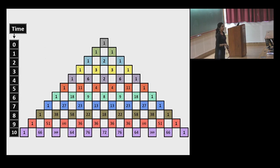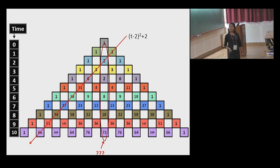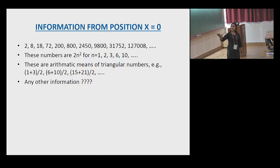If I write the same with numbers again, without that 2 to the power t division, what I can observe from here for the quantum walker? Any quantum walker can reach up to t over root 2. Near close to t over root 2, if I see the positions, then the numbers are like (t minus 2) whole square plus 2. If I consider the occupation probability at position 0, the numbers are 2, 8, 18, 72, 200 and so on. These numbers are typically some kind of 2n squared. These are arithmetic means of triangular numbers.